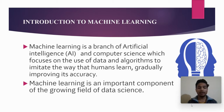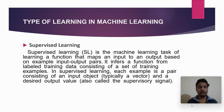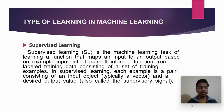Machine learning is an important component of the growing field of data science. There are some types of learning. The first one is supervised learning. Supervised learning is a machine learning task of learning a function that maps an input to an output based on example input-output pairs. It infers a function from labeled training data consisting of a set of training examples, where each example is a pair consisting of an input object, typically a vector, and a desired output value.